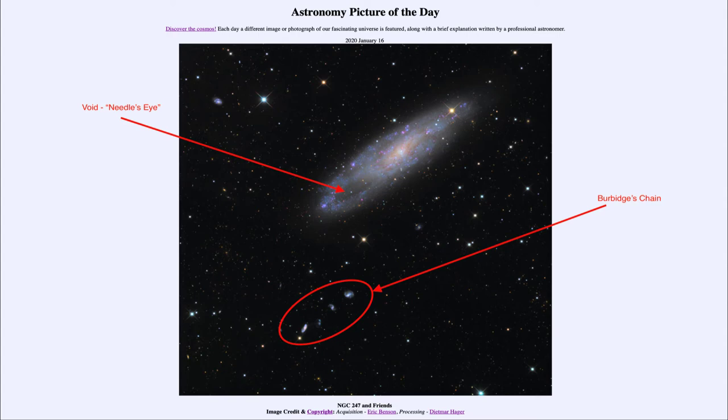When we look at things on the sky, what looks close together may actually be very distant because we lose that third dimensional aspect. We know that the top galaxy, the larger one NGC 247, is about 11 million light years away. Burbage's chain, on the other hand, is 300 million light years away. So while they look close together on the sky, they are actually very far apart in space.